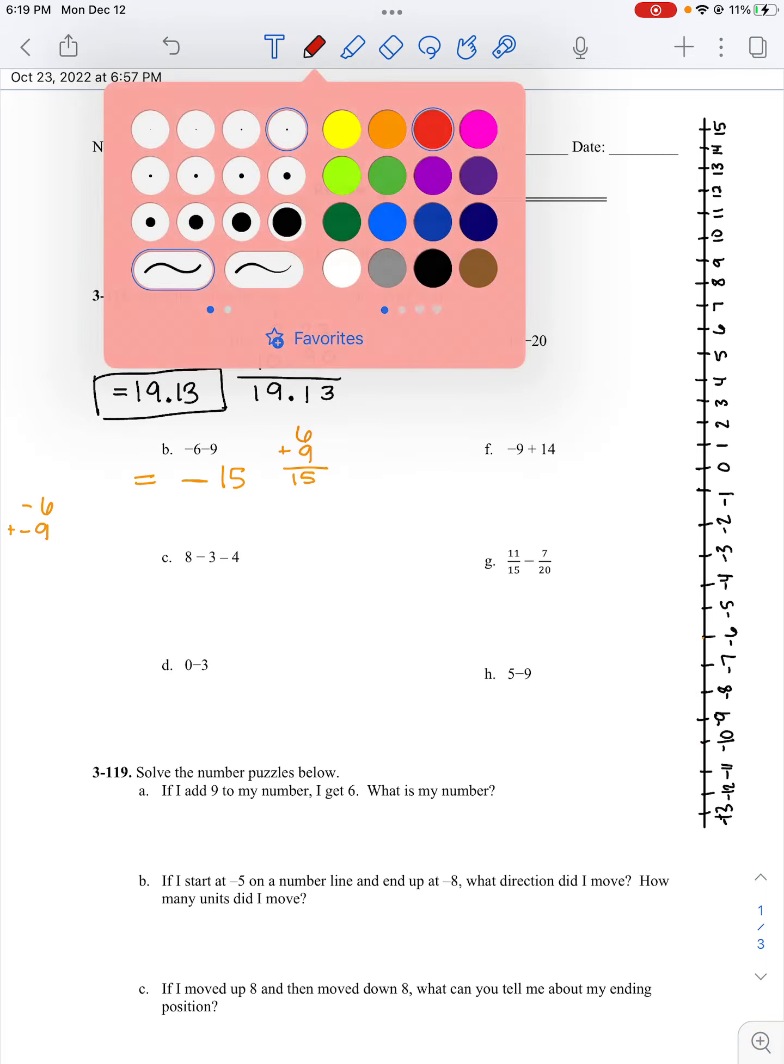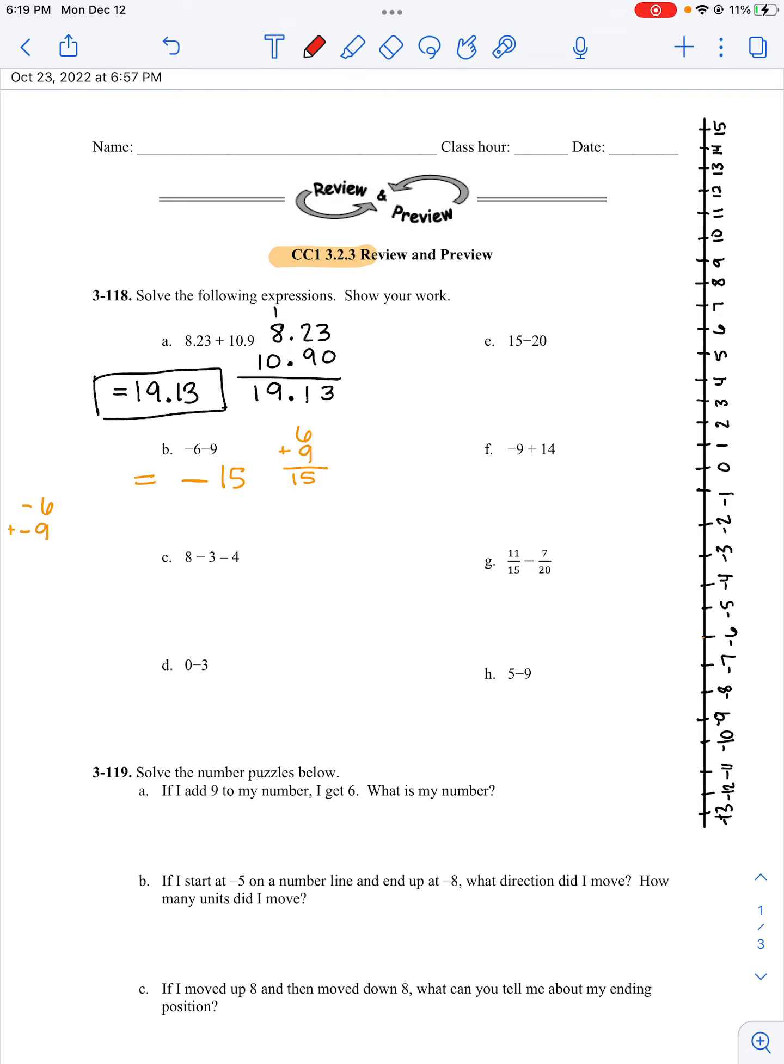Part C: 8 minus 3 minus 4. I find 8 on my number line. So, I subtract 3. Remember with subtraction, go 1, 2, 3, to the left. Then, I'm going 4 more to the left, because I'm subtracting. 1, 2, 3, 4. So, my answer is going to be 1. 8 minus 3 is 5 minus 4 is 1.